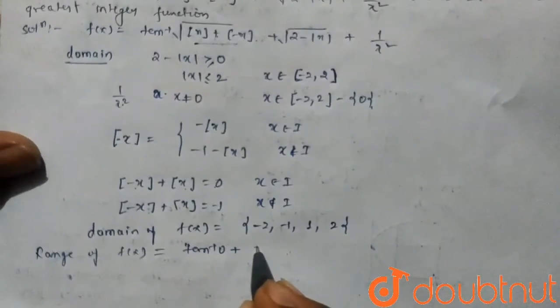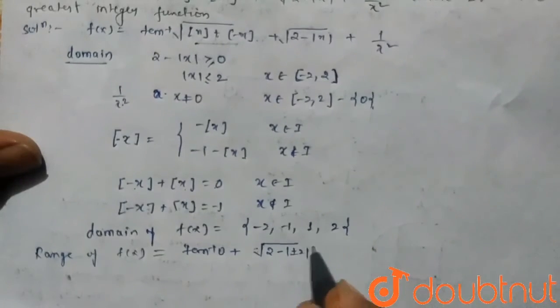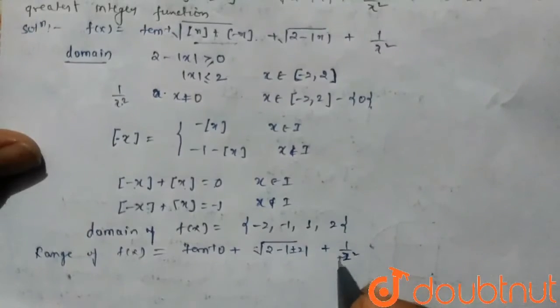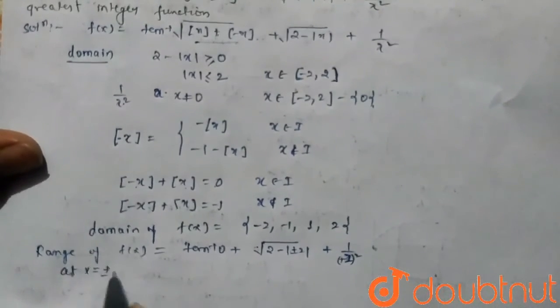Plus 1 by x squared, it means 1 by plus minus... x equals to plus minus 2, its value is 1 by 4.